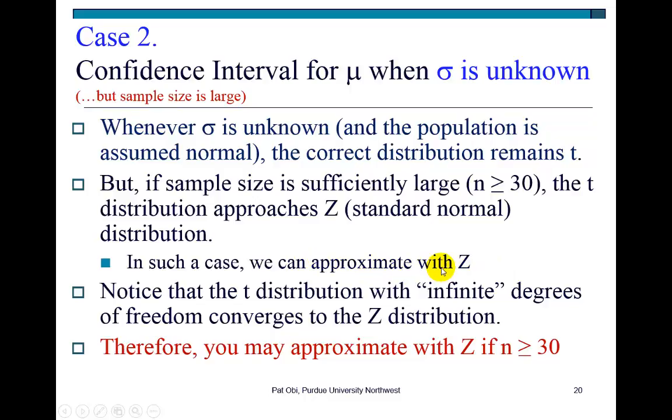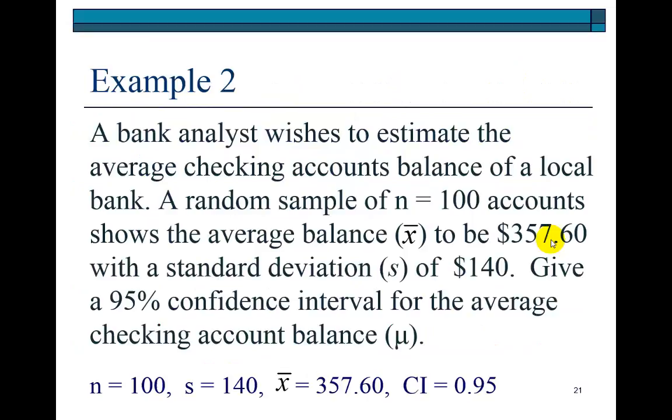You might say, why worry with z if we can definitely use t, which is what's correct? Answer: the critical values for z are easy to know. For example, for 95% confidence level, we know the critical value is 1.96. For t, you're going to have to go into your tables to look up the actual value. I discuss this because many textbooks provide this approximation.